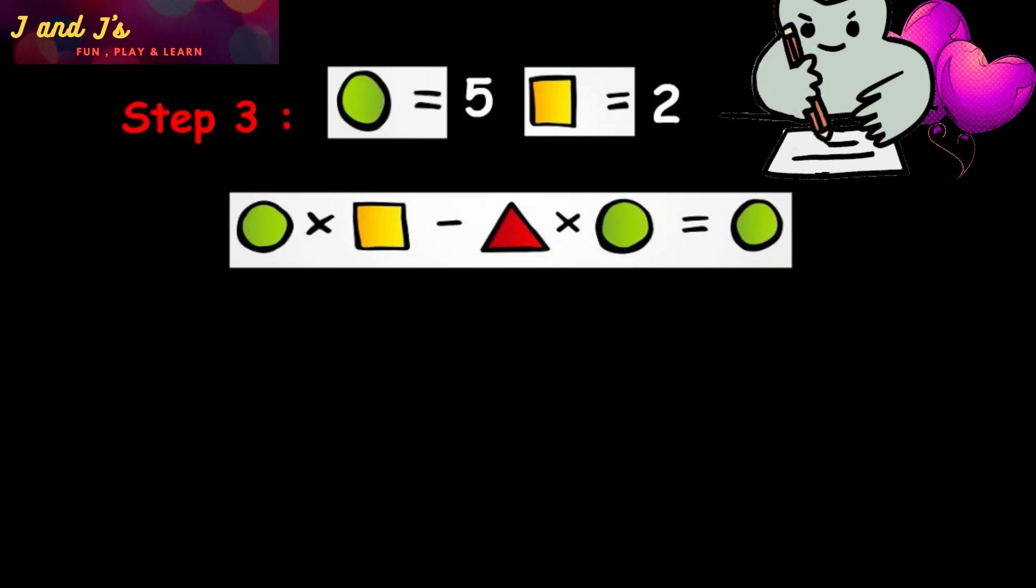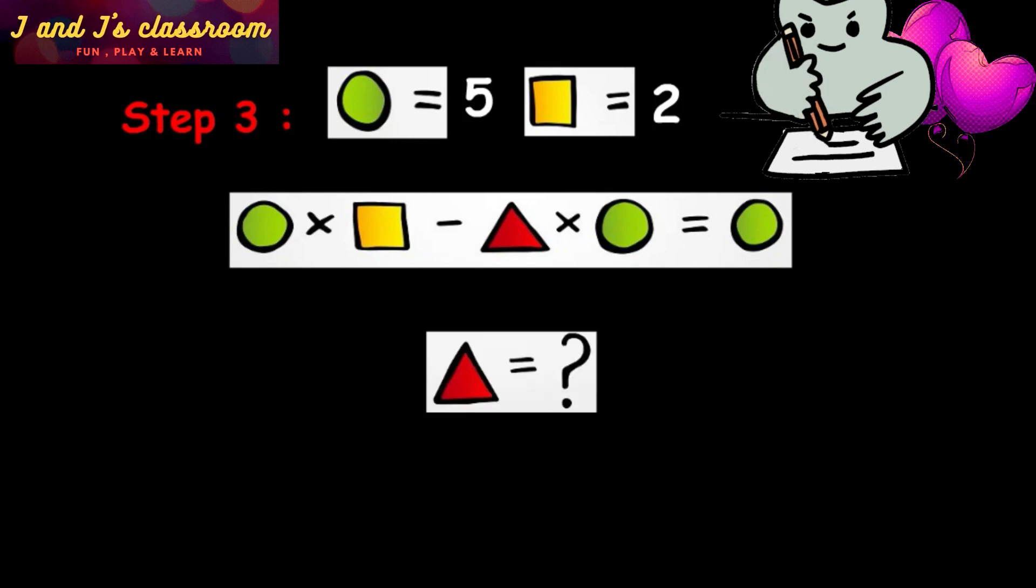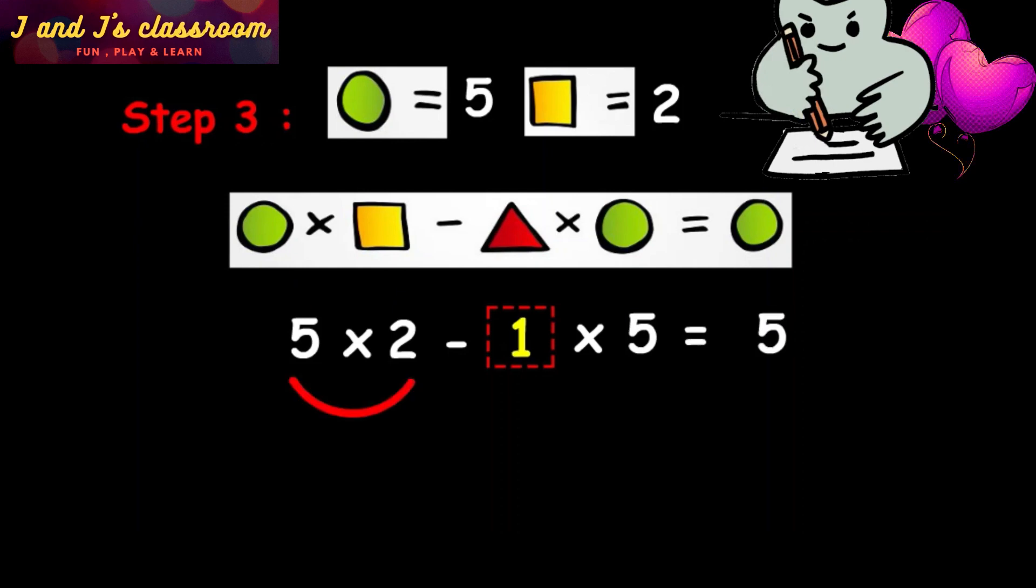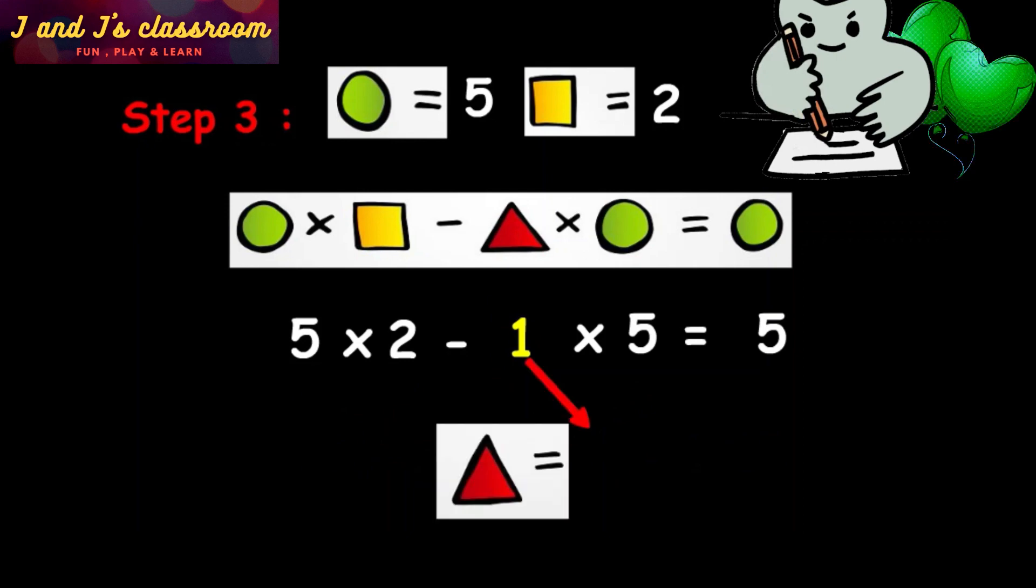The last step, so we are going to find the value of triangle. Assume a number for triangle from 1. And let me check with this equation. If we assume 1 for triangle, oh yeah, 1 is okay for this checking process. So, the value of triangle is 1.